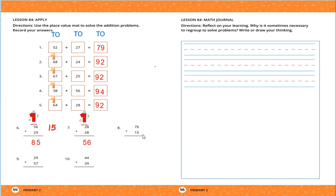Question 8: 76 plus 15. I will add the digits in the ones place: 6 plus 5 — 6 in my mind and 5 on my fingers. After 6: 7, 8, 9, 10, 11. I will write only 1 and carry up 1. Now 1 plus 7 equals 8, then 8 plus 1 equals 9. So the result is 91.